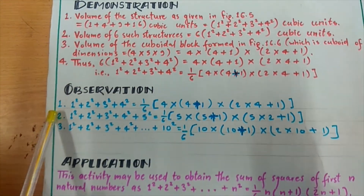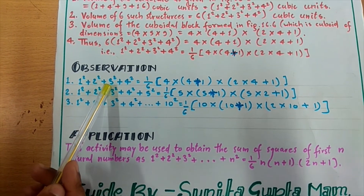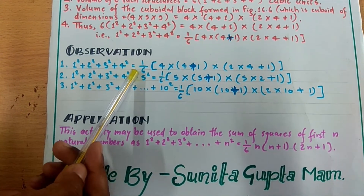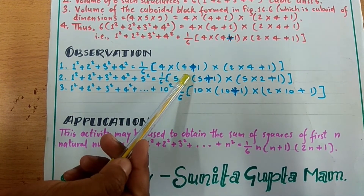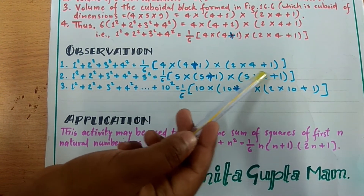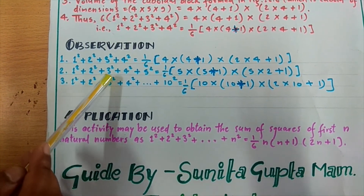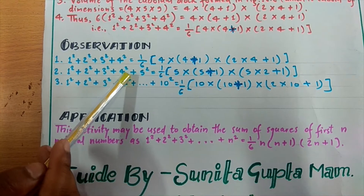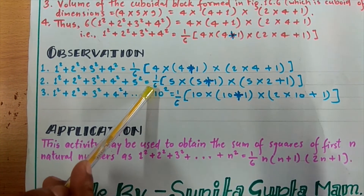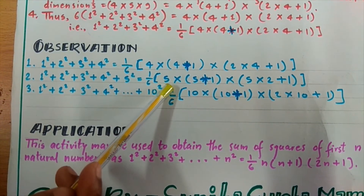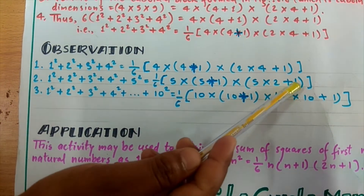By this activity we observe that the sum of 1 squared plus 2 squared plus 3 squared plus 4 squared is equal to (1/6) into 4 into (4 plus 1) into (2 into 4 plus 1). And the sum of 1 squared plus 2 squared plus 3 squared plus 4 squared plus 5 squared is equal to (1/6) into 5 into (5 plus 1) into (2 into 5 plus 1).